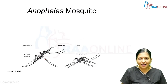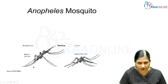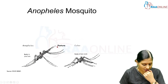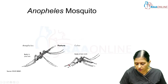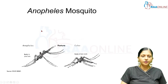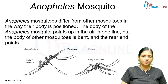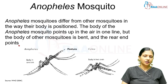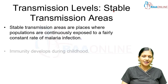To identify a female Anopheles mosquito: this mosquito always rests at 45 degrees to the surface. The Anopheles mosquito's body points up in the air in one line, whereas a Culex mosquito has a bent posture with the rear end pointing downwards. So the key distinguishing feature is that the Anopheles mosquito rests at 45 degrees from the ground.